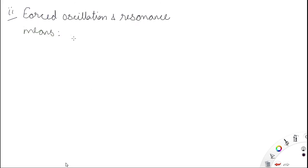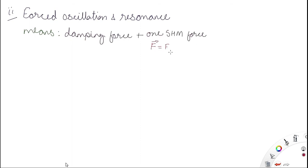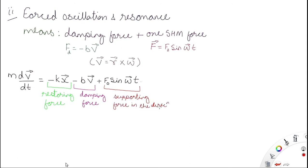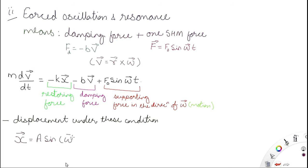Now for forced oscillation and resonance: in addition to the negative (damping) forces, the system also has a supporting force that increases the amplitude. The resultant equation of motion is: m·dV/dt = −Kx − BV + F₀·sin(ωt), where F₀·sin(ωt) is the supporting (applied) force, −BV is the damping force, and −Kx is the restoring force.